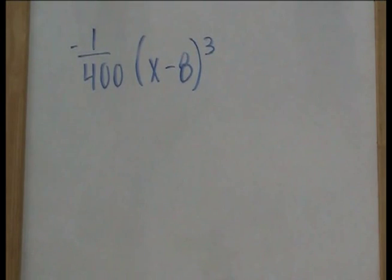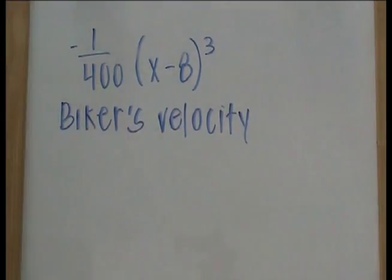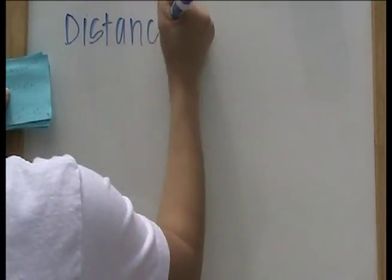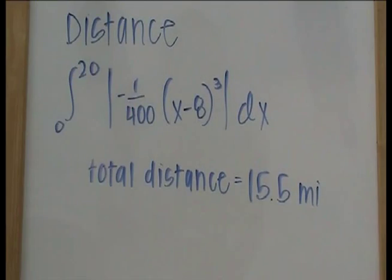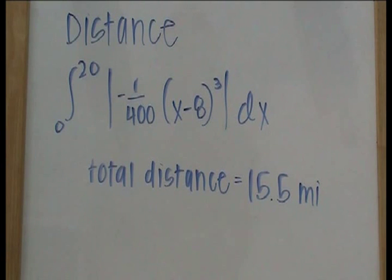The problem gives the biker's velocity as negative 1 divided by 400 times x minus 8 cubed miles per minute. To find the total distance the biker traveled, you take the integral from 0 to 20 of the absolute value of the given function, because distance is always positive, which ends up being 15.5 miles.